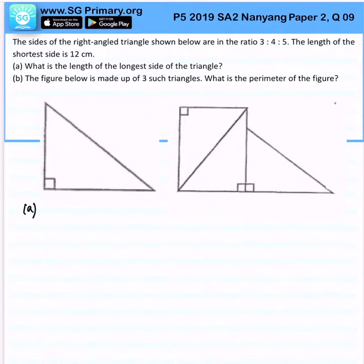Very simple. Since we know the shortest side is 12 cm and the ratio is 3:4:5, to find the length of the longest side, I'll take 12 divided by 3 multiplied by 5, and that equals 20 cm.